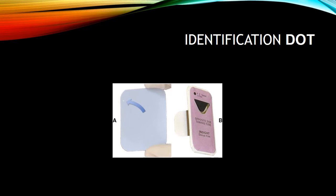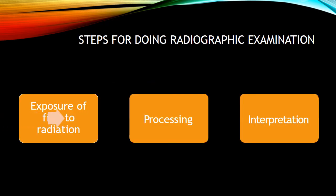The steps in performing a radiographic examination apply to all film-based radiology. The first step is exposing the film to x-ray — positioning the patient, placing the radiograph, and exposing it. The second step is processing, and the third step is interpretation. Each of these steps involves various sub-processes which we will discuss further.